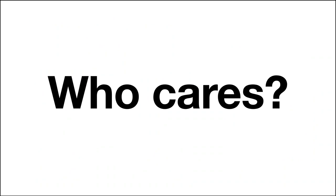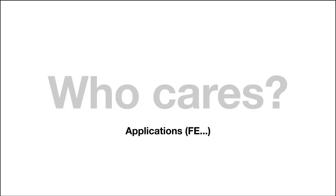Let me address the elephant in the room here. Why do we care about software obfuscation, and why would we spend so much effort as a community to understand this primitive? For starters, indistinguishability obfuscation has a lot of interesting applications, and often in conjunction with very simple cryptographic primitives such as one-way functions, iO encompasses most of the cryptographic material that we know. In some sense, it can be thought of as the crypto-complete primitive.